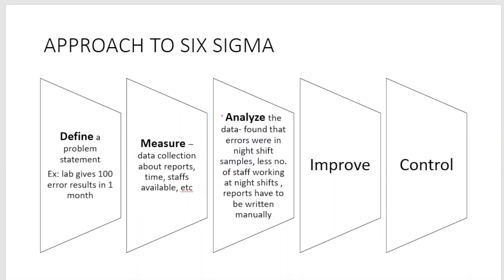Next is Analyze — with the statistical data you analyze the problem. In this example, it was found that the errors were maximum in the night shift samples because there were fewer staff working at night and reports had to be written manually. By analyzing the data, we found where the errors came from.